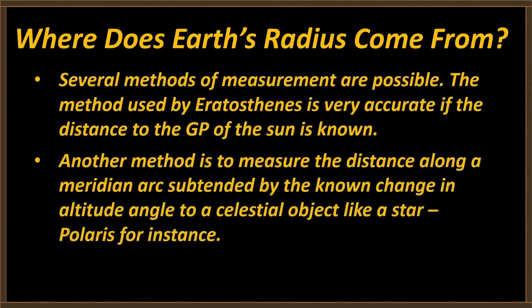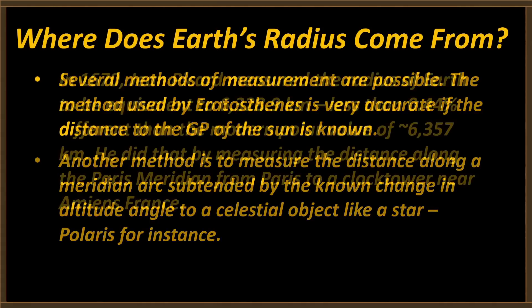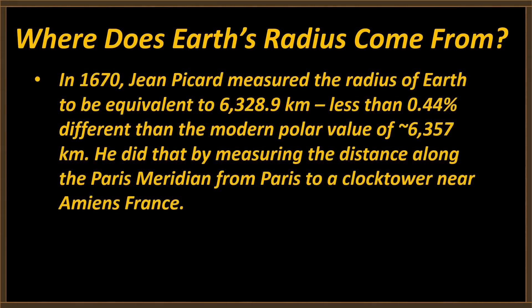The circumference of the Earth has been known and measured with increasing accuracy since the time of Eratosthenes. A lot of people have done that experiment — in fact, I did it; it's the very first video on this channel. Obviously, if you know the circumference, you know the radius. Several methods of measurement are possible. The method used by Eratosthenes is very accurate if you know the distance to the GP of the Sun. Another method is to measure the distance along a meridian arc subtended by the known change in altitude angle to a celestial object like a star — Polaris, for instance.